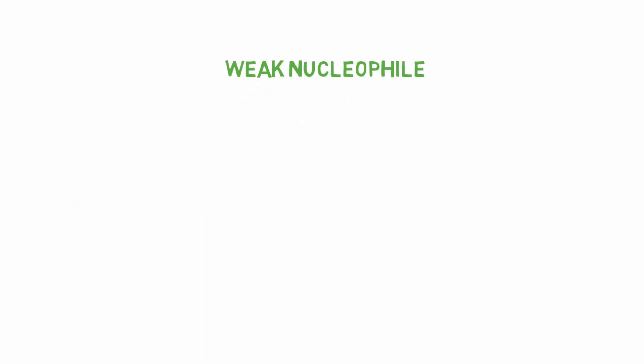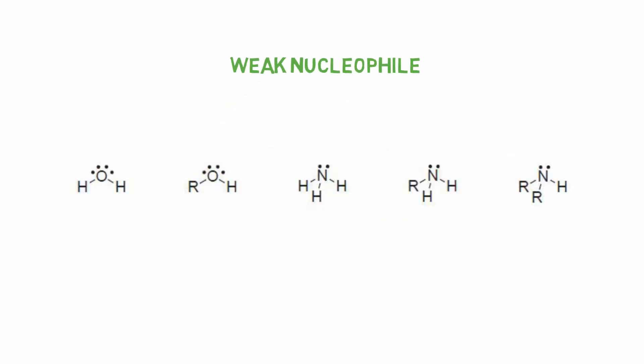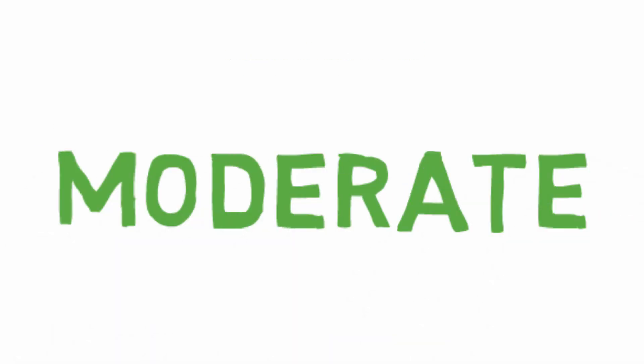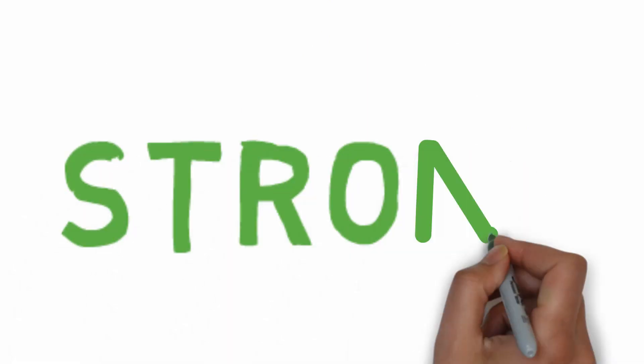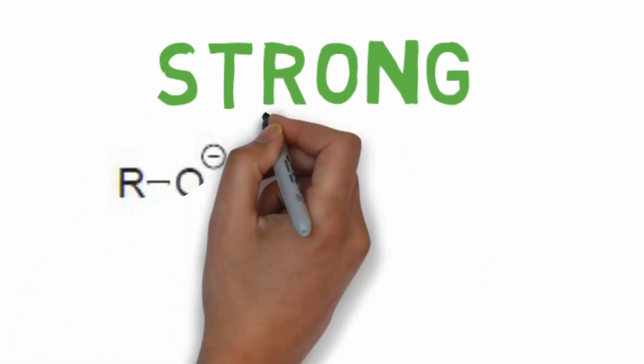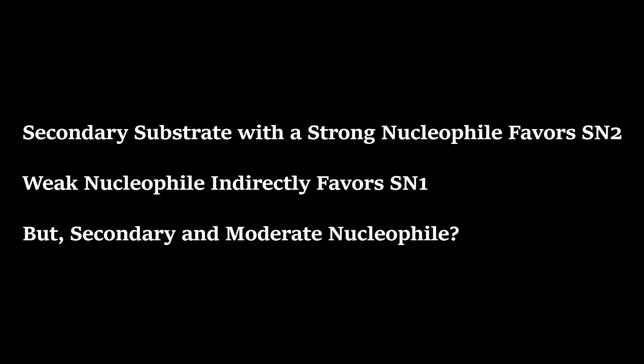Nucleophiles that have only lone pairs are weak. That have stable negative charge like halogen or resonance stabilized ions are moderate. And that have unstable negative charge like alkoxide ion are strong nucleophile. If we have a secondary and a moderate nucleophile, what should we do? Well, let's go to the third factor, leaving group.